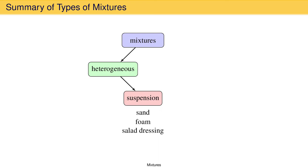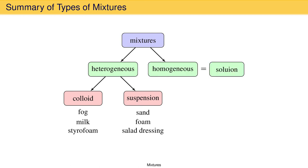If the boundaries between components can only be seen with magnification, the heterogeneous mixture is a colloid. Examples being fog, milk, and styrofoam. If the components are mixed on the molecular level such that there are no boundaries between components, the mixture is homogeneous. This is also known as a solution.